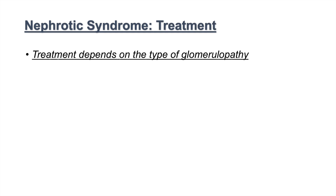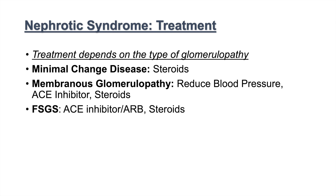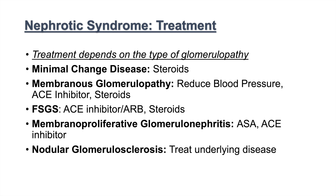So how do we treat nephrotic syndrome? Treatment depends on the type of glomerulopathy. For minimal change disease, we use steroids. For membranous glomerulopathy, we often want to reduce blood pressure, use an ACE inhibitor, and use steroids. For FSGS, we want to use an ACE inhibitor or an ARB and steroids. For membranoproliferative glomerulonephritis, we want to use ASA and an ACE inhibitor. For nodular glomerulosclerosis, we want to treat the underlying disease, often diabetes. And for renal amyloidosis, treatment depends on whether it's primary or secondary.